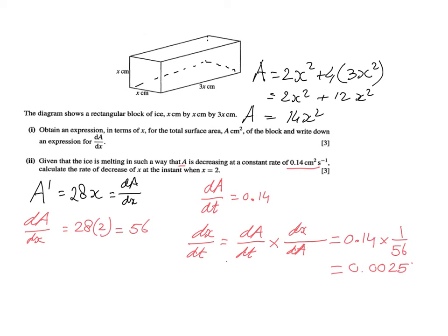So connected rates of change. Again, read the question carefully. They give you a particular rate of change. They say dA with regards to time is 0.14. And they're asking for dx/dt. And then you have to connect the rates of change in order to find dx/dt. So in this case, dA/dt times dx/dA, so 0.0025.